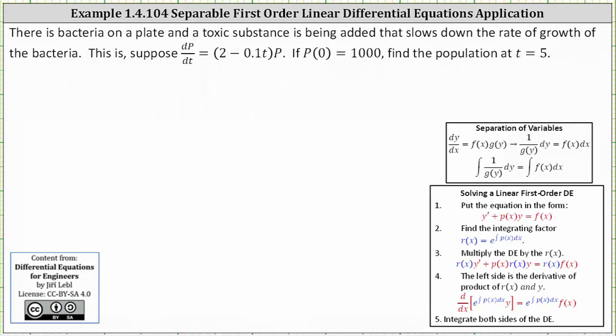There's bacteria on a plate and a toxic substance is being added that slows down the rate of growth of the bacteria. This is supposed to dp/dt equals the quantity (2 - 0.1t) times p. If p(0) equals 1,000, find the population at t equals 5.